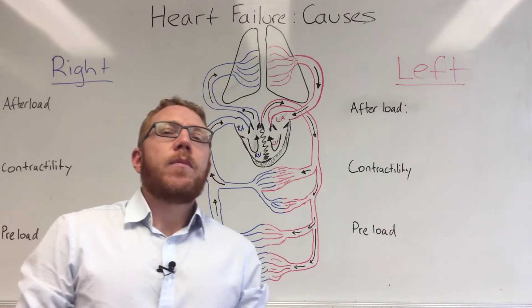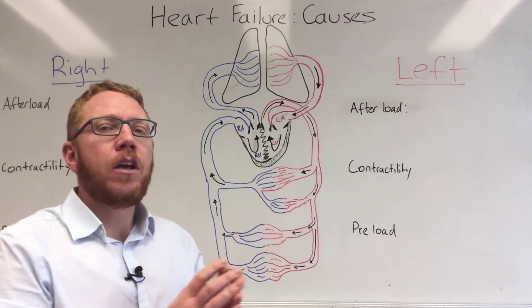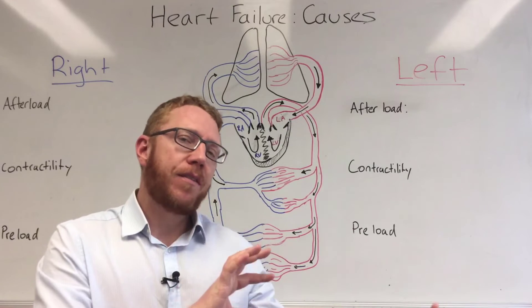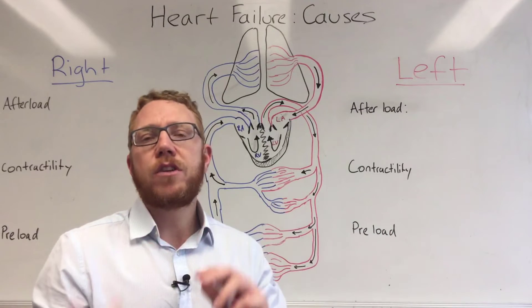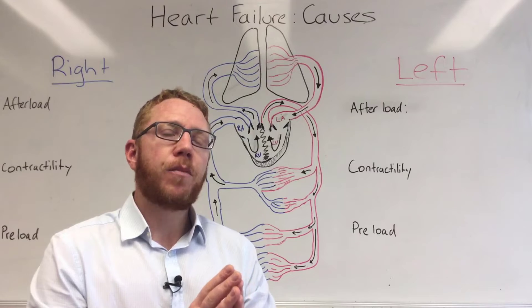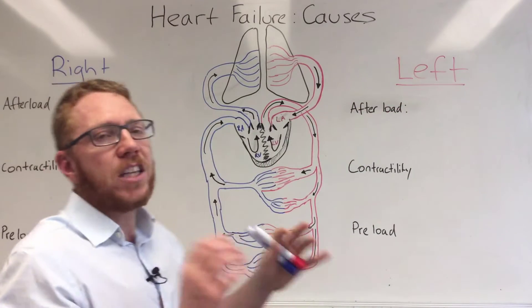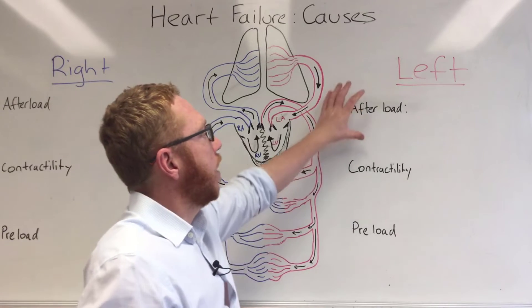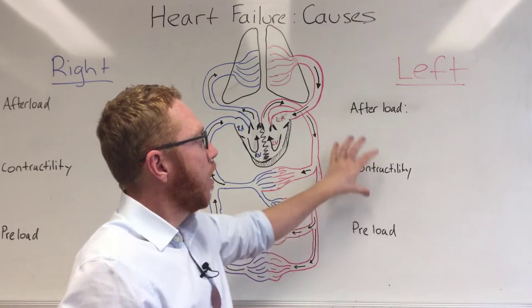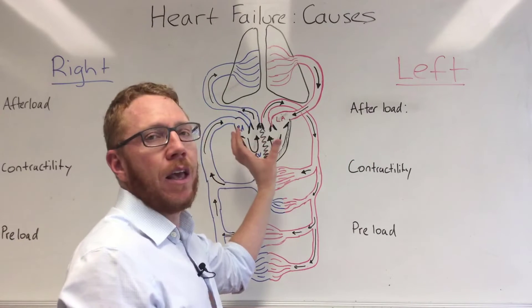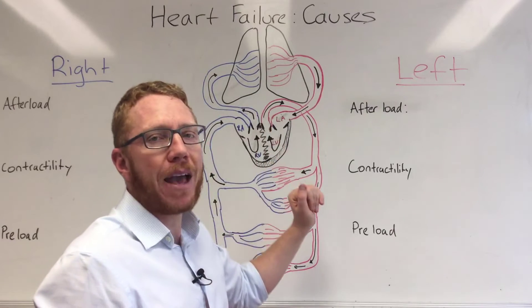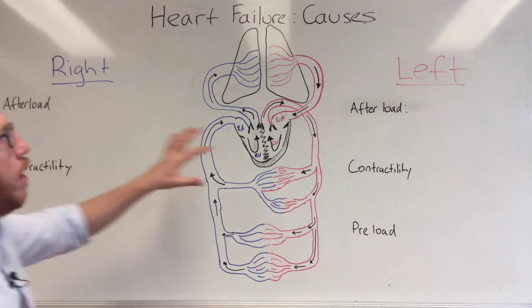Heart failure is essentially the heart's inability to pump blood out to the body for its demands. Heart failure can be broken into different categories: left-sided versus right-sided, systolic versus diastolic, acute versus chronic, and preserved ejection fraction versus reduced ejection fraction. Today we focus on left-sided and right-sided, specifically categorizing causes by afterload — too much pressure or resistance against ventricular contraction — contractility — an intrinsic problem with the ventricle's ability to contract — and preload — the amount of fluid returning to the heart.